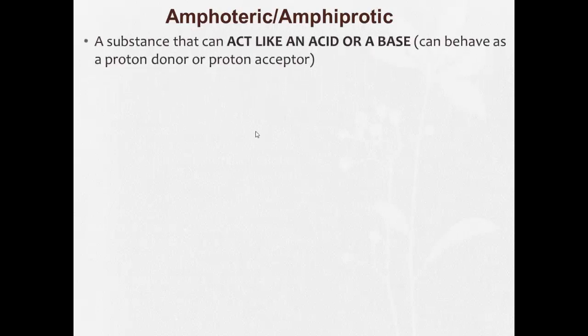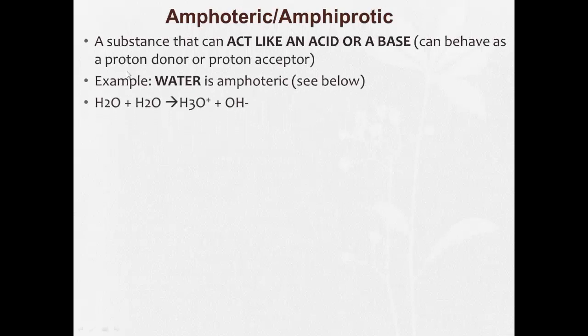These words will be kind of used interchangeably. Amphoteric or amphiprotic is a substance that can act like an acid or a base. It can behave as a proton donor or an acceptor. And as we see below here, water can do both. Water can actually give up, and you have HOH. And an H can break off, so we end up with OH minus and an H plus, which then finds another water molecule and hangs out with that to make H3O plus.